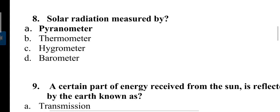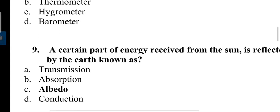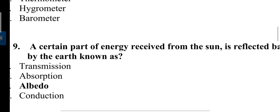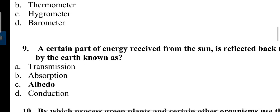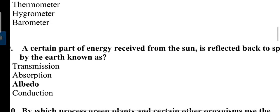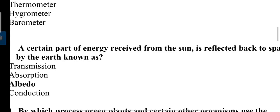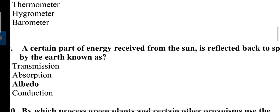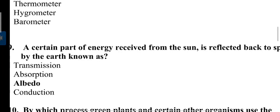A certain part of energy received from the sun is reflected back to space by the earth, known as albedo. Albedo we measure in percentage. The highest percentage of albedo is fresh snow.